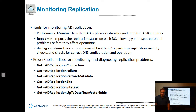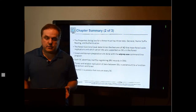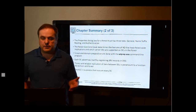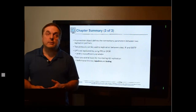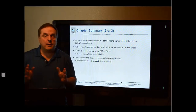PowerShell cmdlets are also available for monitoring and diagnosing replication. Troubleshooting AD replication has been around longer than PowerShell, which is why dedicated tools already exist, but PowerShell cmdlets work as well. In summary: a domain is the primary identifying administrative unit in Active Directory. We covered single versus multi-domain structures for small and medium businesses, replication, trusts, transitive versus non-transitive, and tools to troubleshoot replication. That will do it for Module 7 — see you in Module 8, where we're almost done with the course.